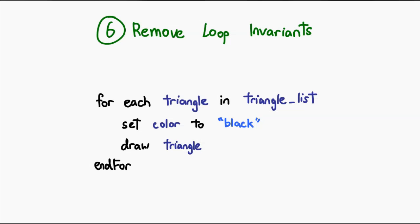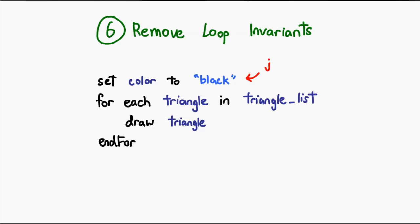Number six, a very simple optimization where you look in a loop, and you look for something that doesn't change. These things are called loop invariants. And since, well, you are repeatedly calling the same statement in a redundant manner, why not move it out of the loop and have it execute just once before the loop begins? That, of course, saves you some time as well.